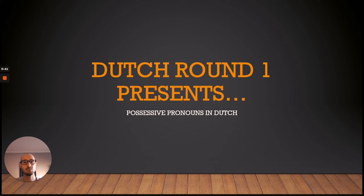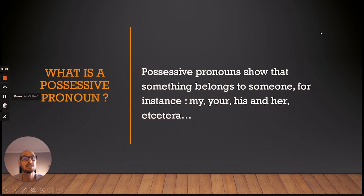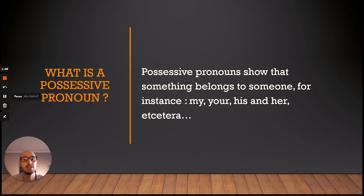But without much further ado, let's go for it. So what is a possessive pronoun? Well, possessive pronouns show that something belongs to someone. For instance, in English that would be my, your, his and her, etc. So in Dutch that would be mijn, jouw, zijn, haar and so on.